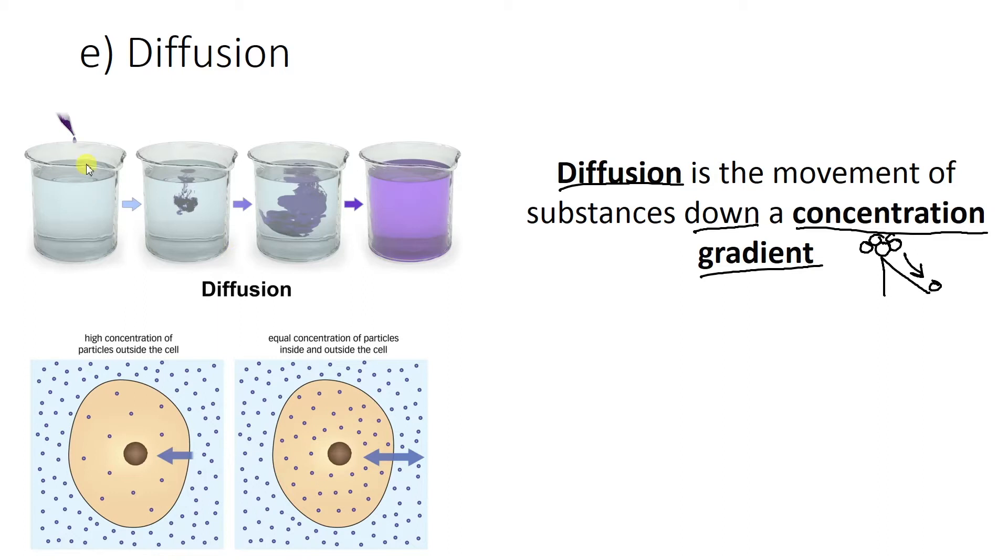And over here we have kind of an example of it happening. So someone's putting some purple dye into a beaker of water and you can see that the dye immediately goes to the middle but then it starts to basically spread out. Diffusion is almost a fancy word for spreading out. It's filling up the container, bumping into the water molecules until it becomes fully diffused.